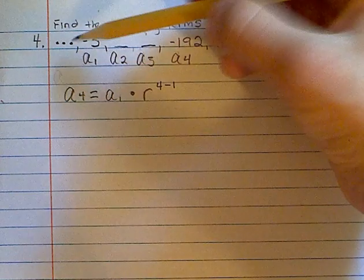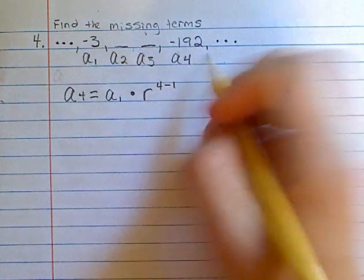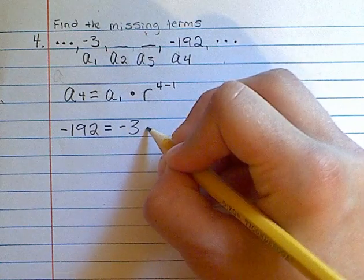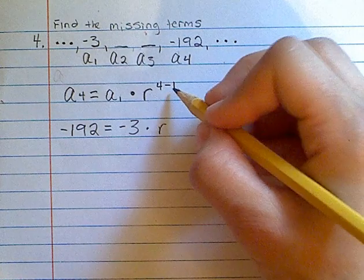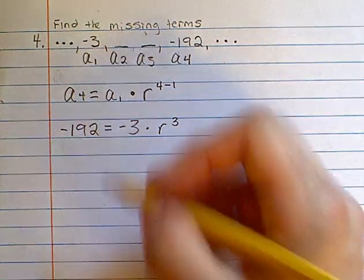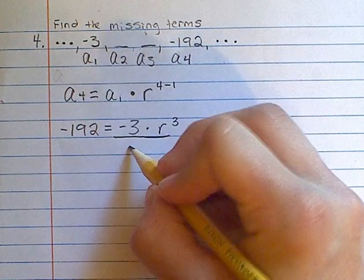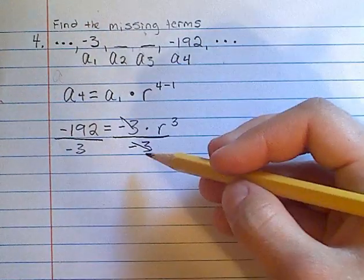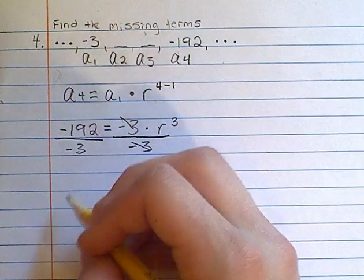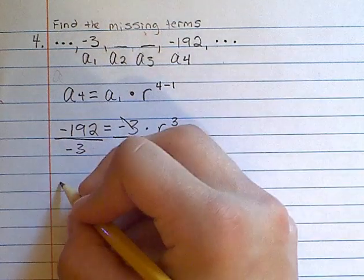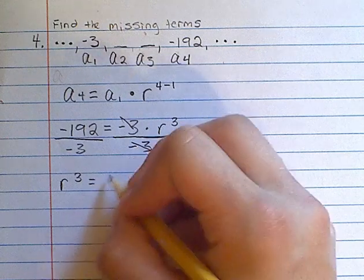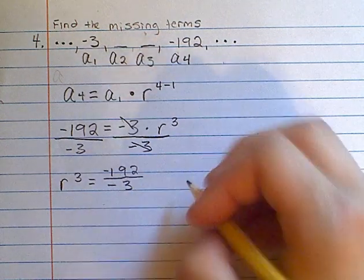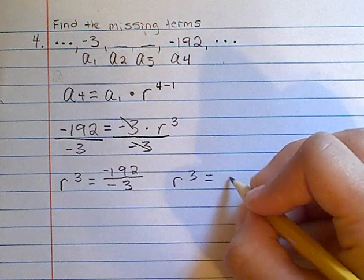So now we can apply these numbers to our equation. That will be negative 192 is equal to negative 3 times r to the power of 3. And now we can divide both sides by negative 3. This will cancel out these negative 3's, leaving us with r cubed. So we'll have r cubed is equal to negative 192 over negative 3. This can be simplified to r cubed is equal to 64.